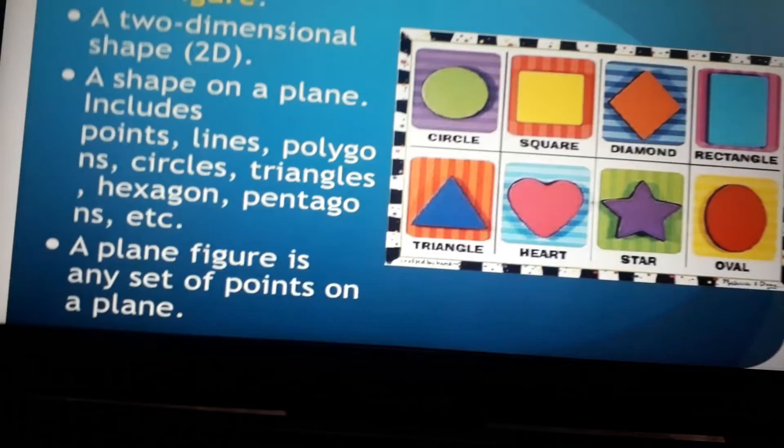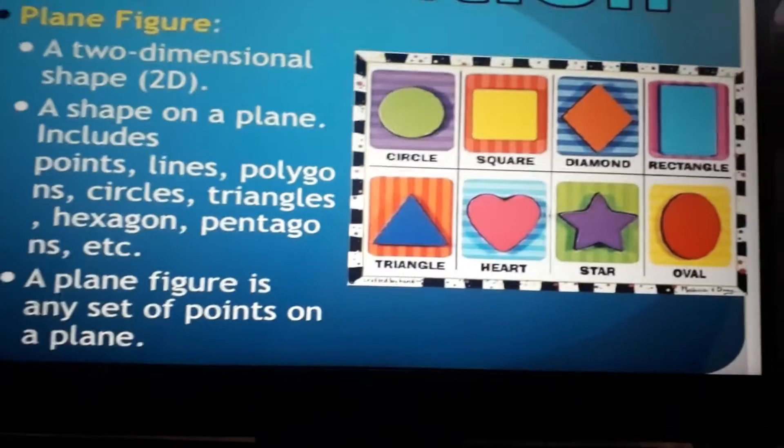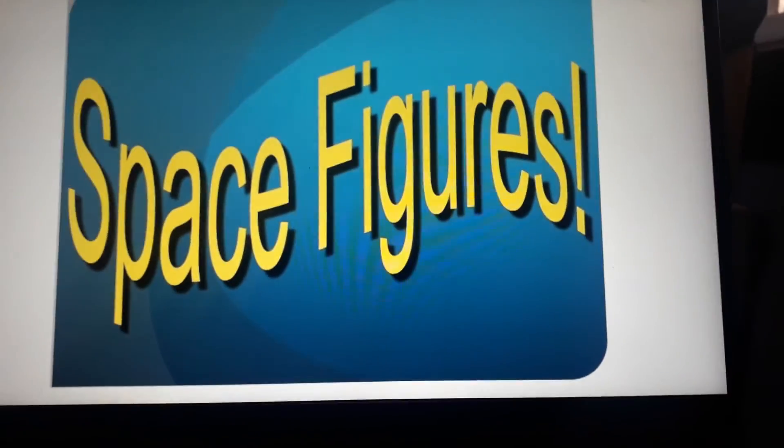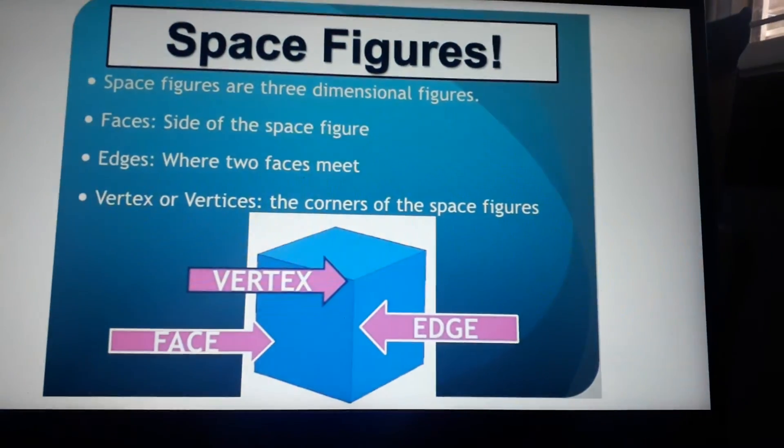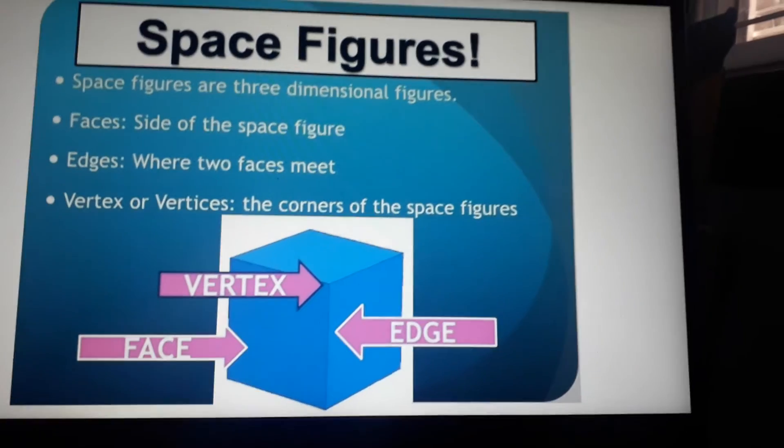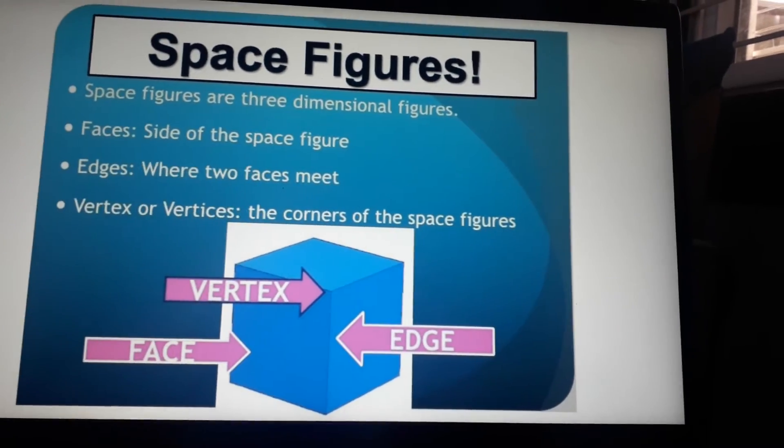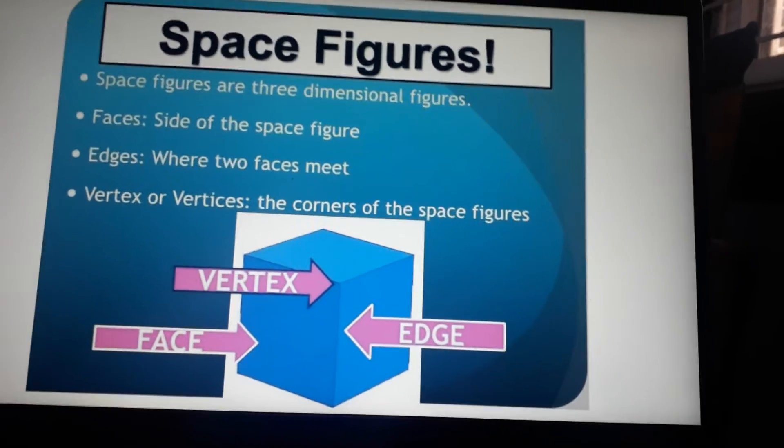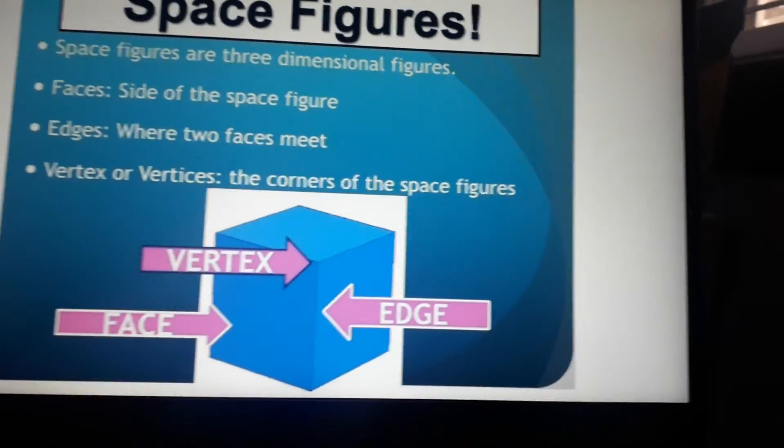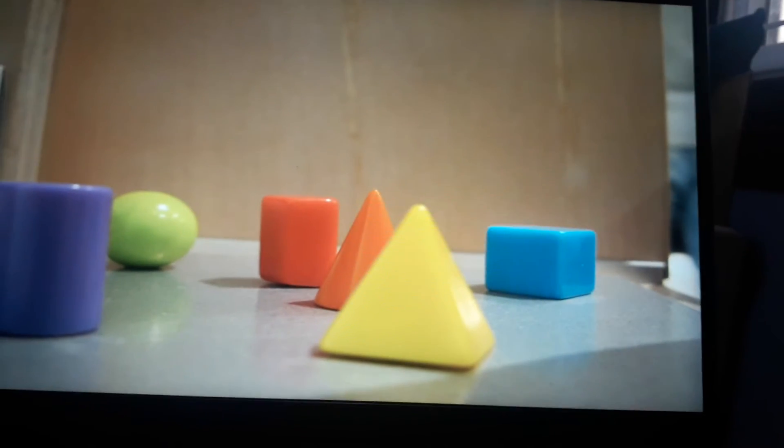Space figures: space figures are three-dimensional figures. Faces are sides of the space figure. Edges are where two faces meet. Vertex or vertices are the corners of space figures. These are the shapes.